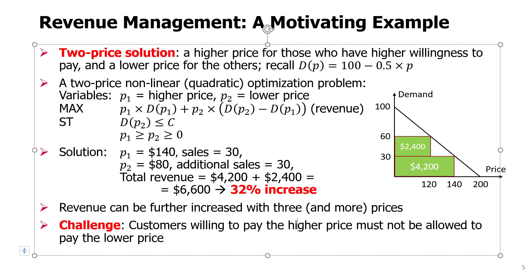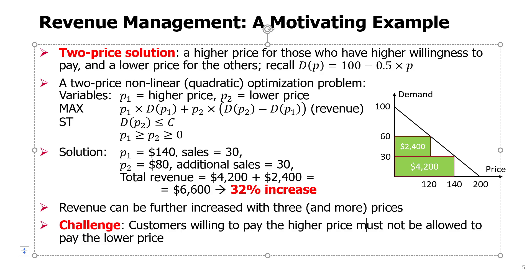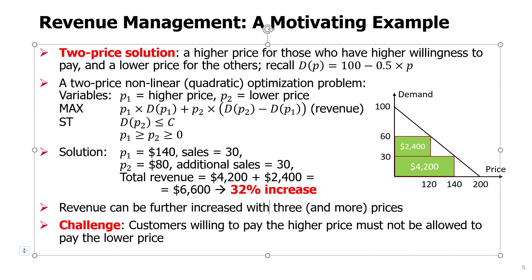Using three or more prices could increase revenue further — the triangles to the right of the green rectangles represent additional potential revenue from customers willing to pay more than $80 or more than $140. However, there are diminishing returns, so each additional price tier yields a smaller incremental gain.